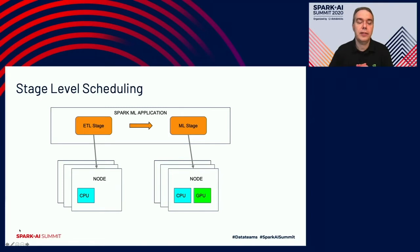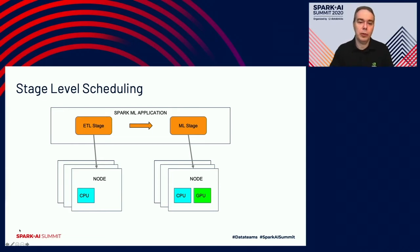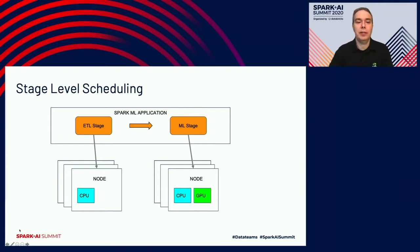Another feature is stage-level scheduling, and this solves the problem where a lot of Spark applications are built with an ETL stage that feeds into a machine learning stage — we're cleaning and prepping data, and then doing machine learning on that data. Traditionally, that is run with CPUs in the ETL stage and GPUs for the ML training stage. The problem with that today is that the ETL stage is not using GPUs while the machine learning stage is.